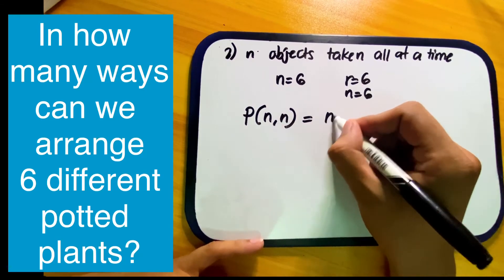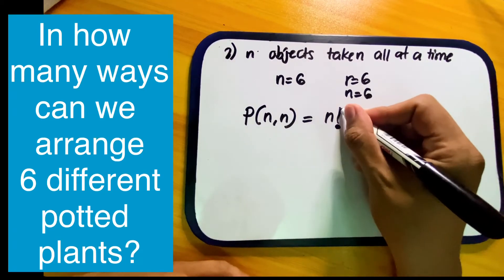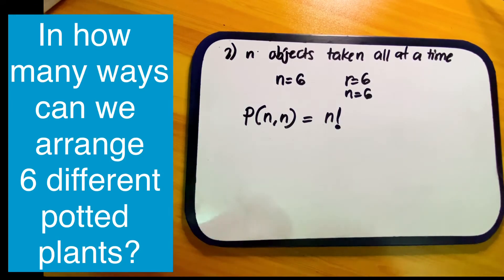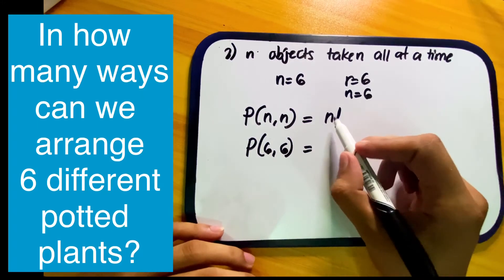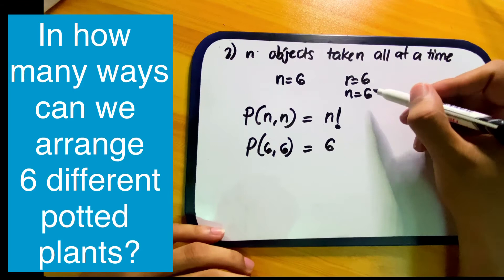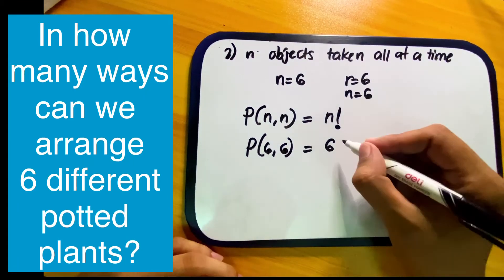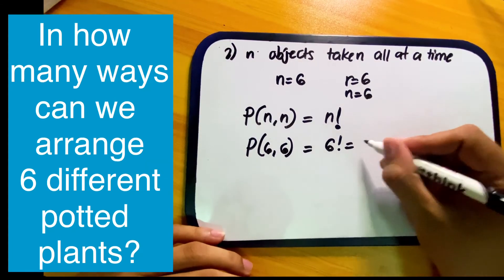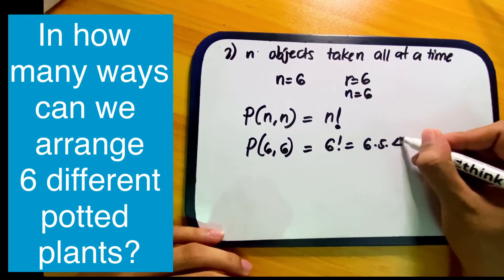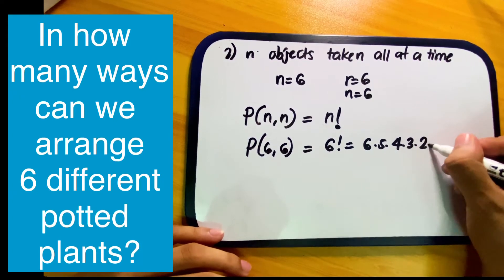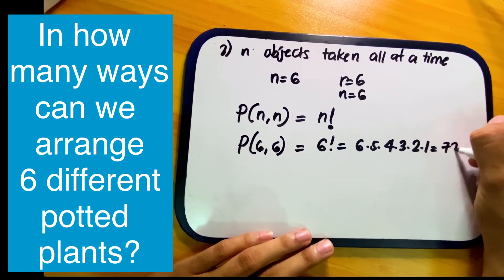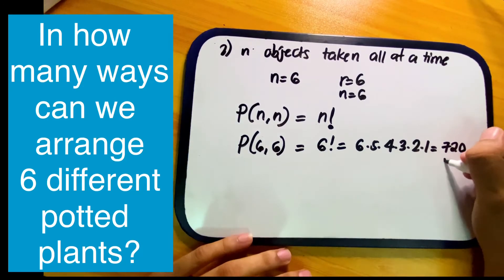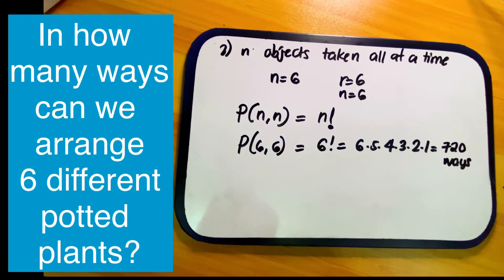The formula for n objects taken all at a time is simply n factorial. So P(6, 6) = 6 factorial = 6 × 5 × 4 × 3 × 2 × 1. The result is 720, so there are 720 ways to arrange six different potted plants.